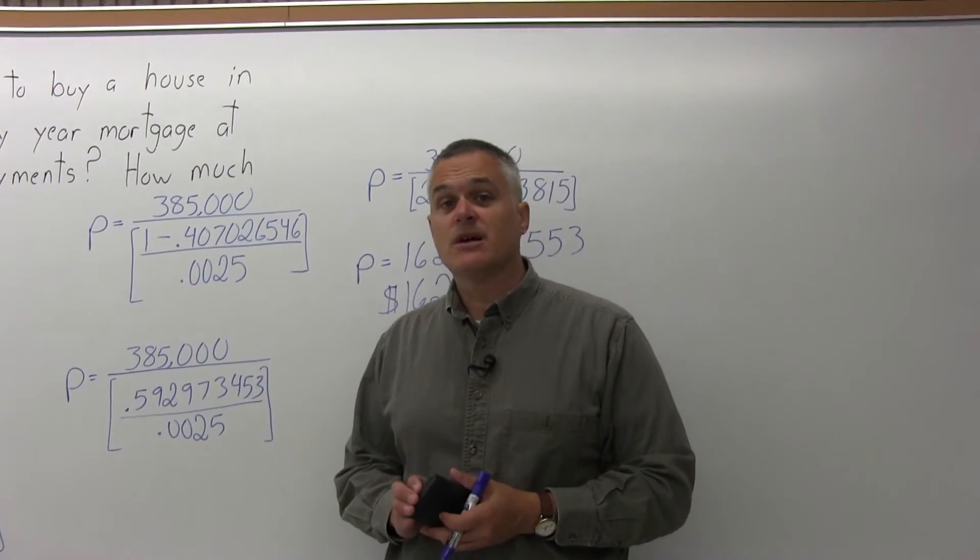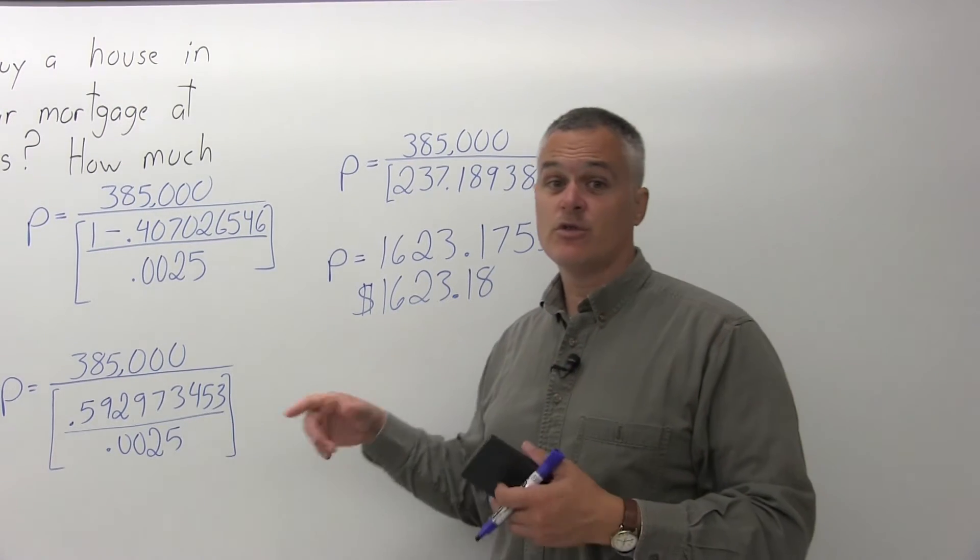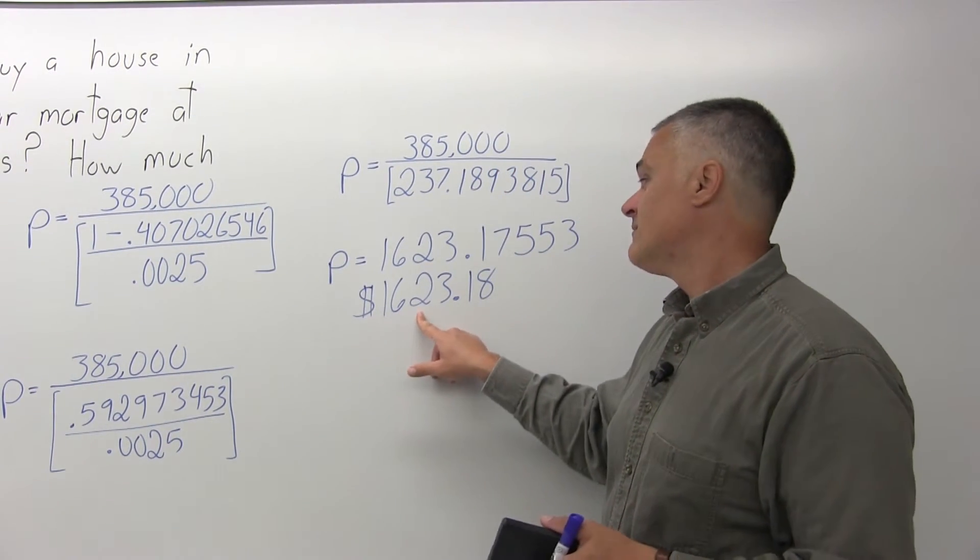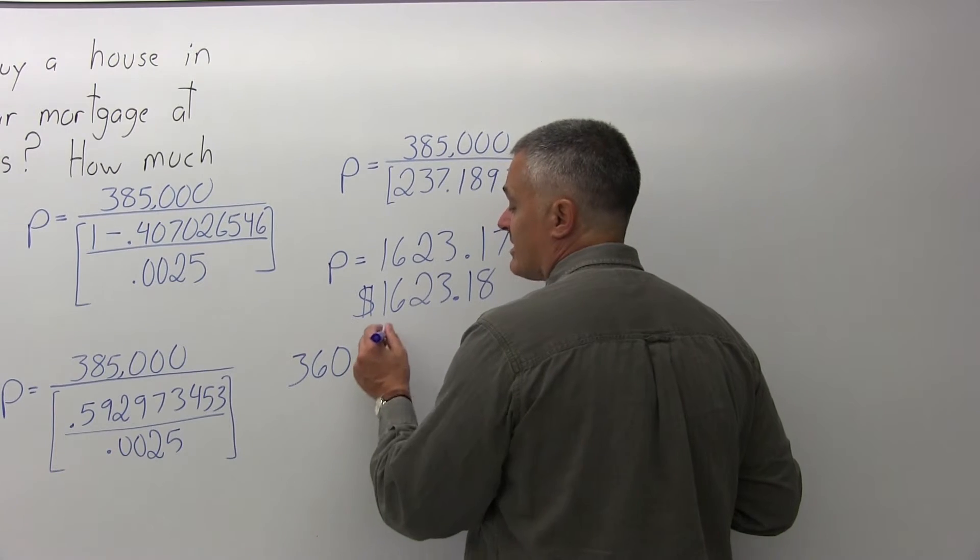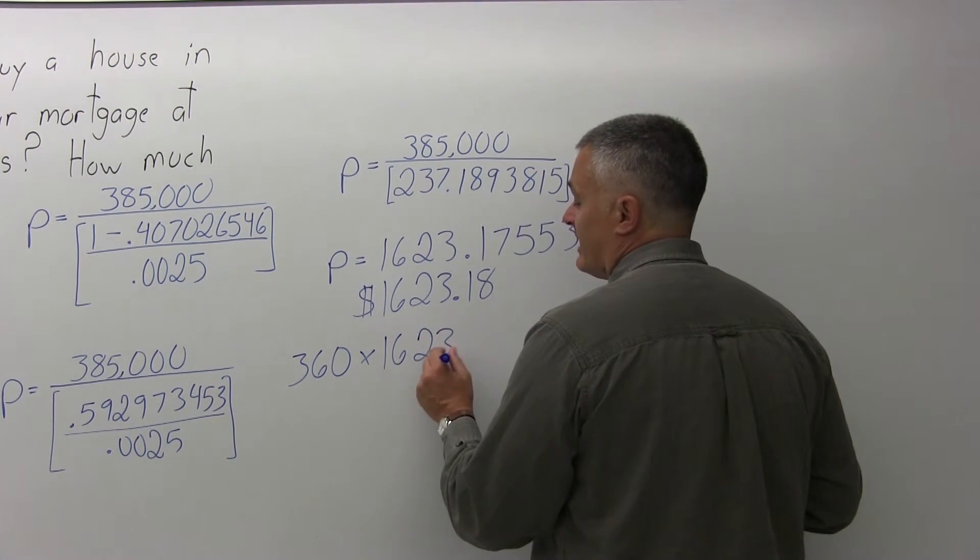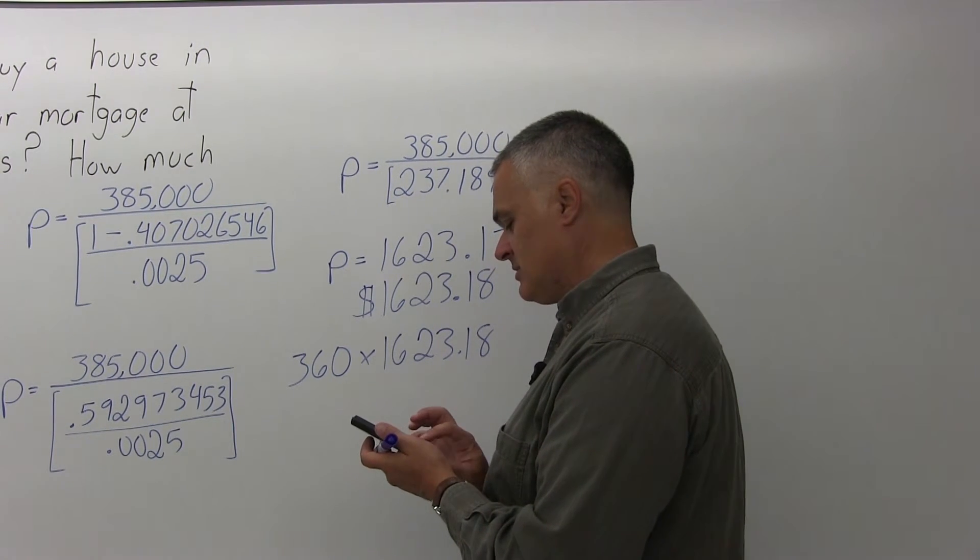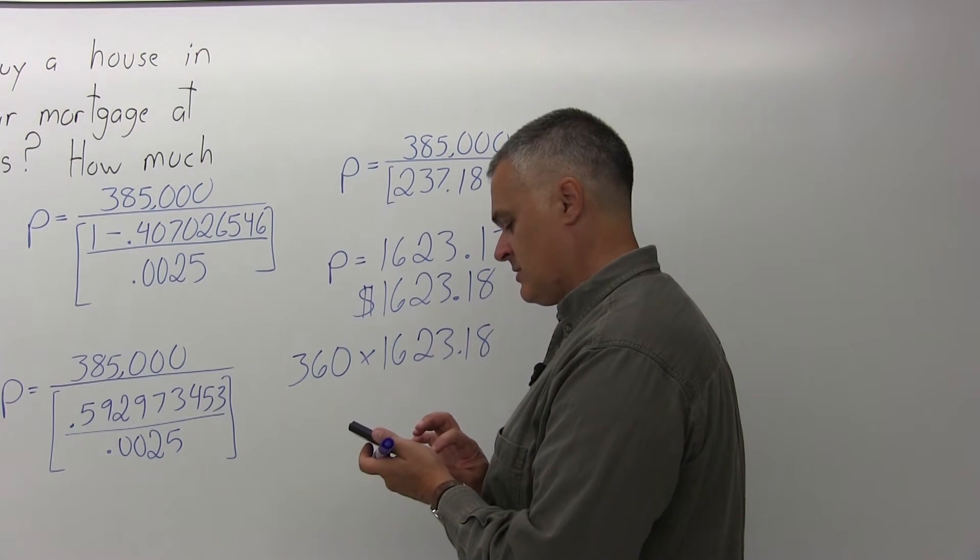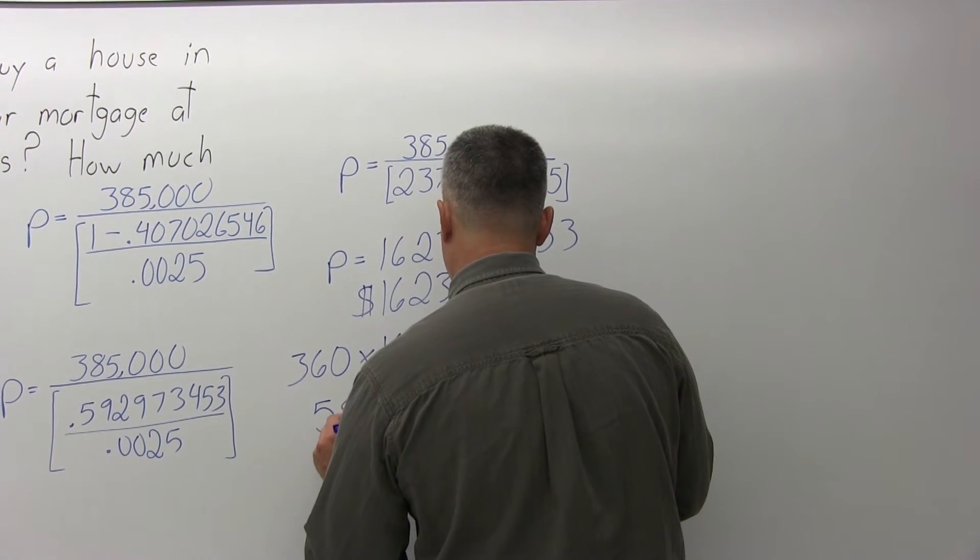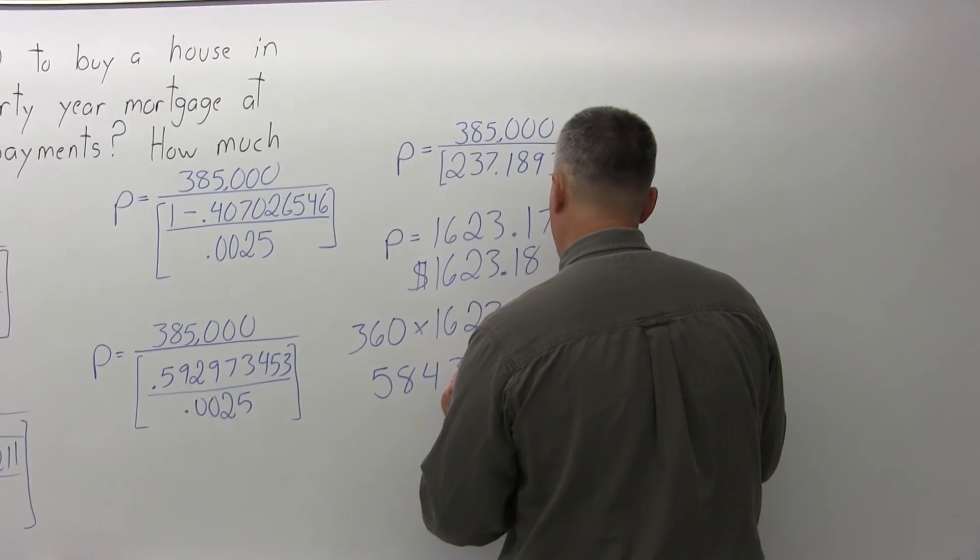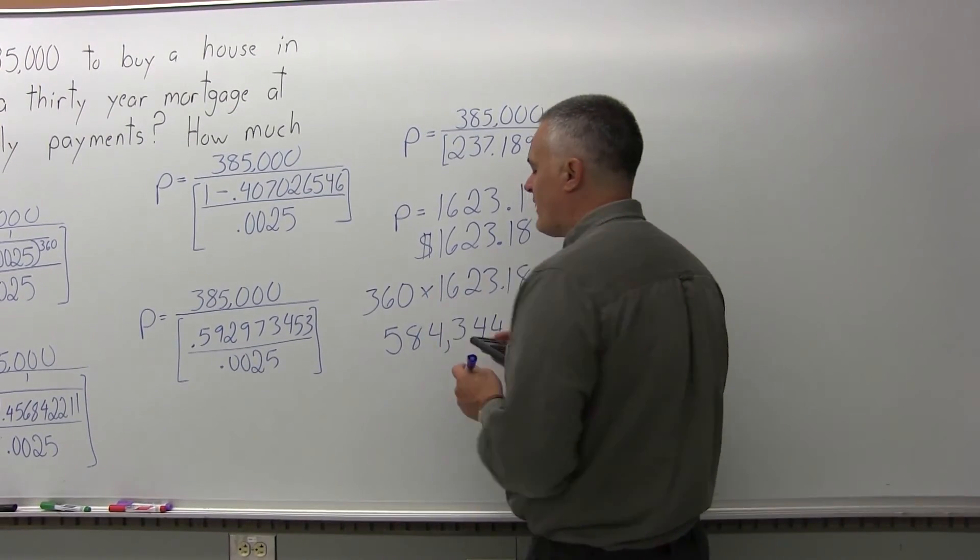And the second part of the question is how much interest do they pay? They're going to pay this every month for 30 years. So there's 12 months per year, 30 years, it's 360 payments of a little over $1,600. So the total they pay back to the lender is 360, the number of payments, times 1,623.18, the amount of each payment. So the total paid back to the lender is $584,344.80.